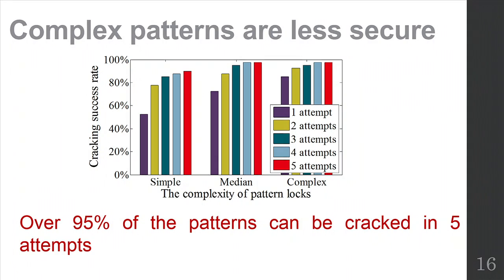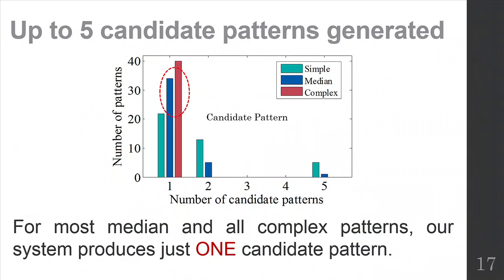And this shows the overall result. From it, we can see we can correct over 95% patterns in five attempts. Also, the statistic pattern shows that our system produced no more than five candidate patterns. And for most medium and complex patterns, our system would just produce one candidate pattern, which means complex pattern may provide weaker protection than simple pattern.